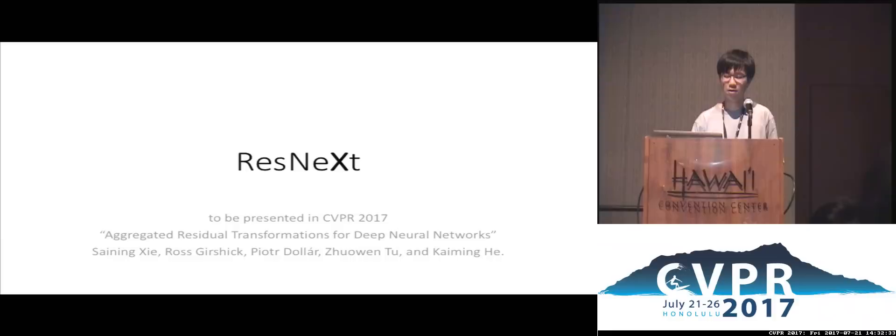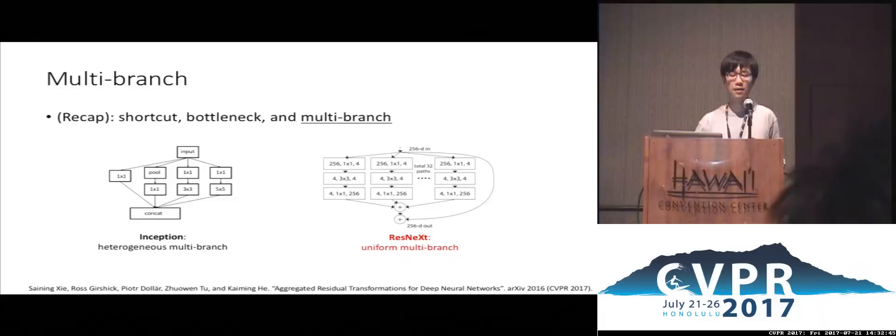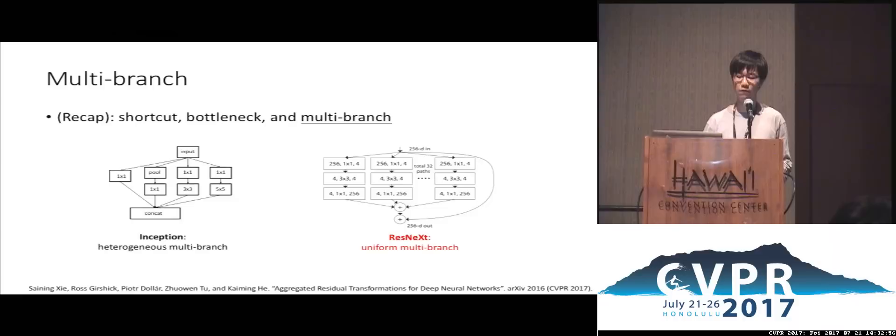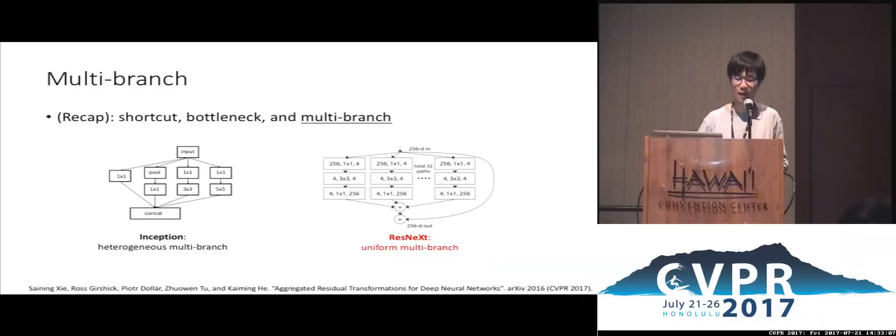Next I will talk about one extension of ResNet called ResNext, which will be presented at this CVPR. As mentioned, there are three key components in GoogleNet or Inception: shortcut, bottleneck, and multi-branch. In the original ResNet design, we have shortcuts and bottleneck but not the multiple-branch design. ResNext is a simple multi-branch component designed in the ResNet scenario. Unlike Inception which has different shapes for different branches, in ResNext all branches share the same shape and number of filters.